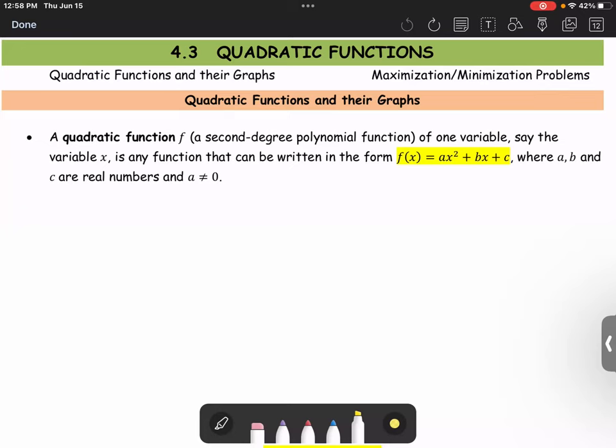A quadratic function f, or second-degree polynomial function of one variable x, is any function that can be written in the form f(x) = ax² + bx + c, where a, b, and c are real numbers and a is not zero.